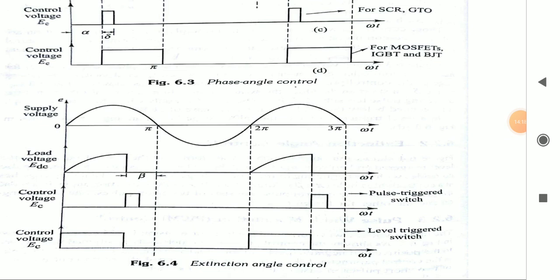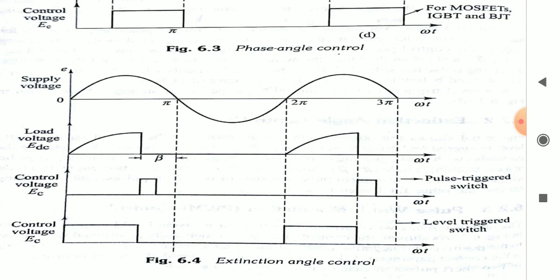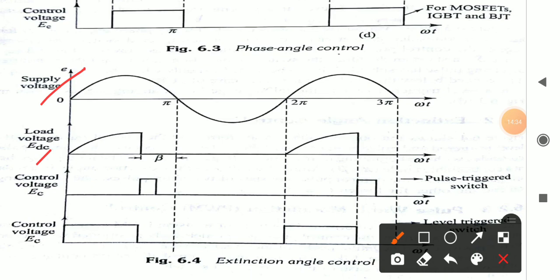The second control technique is extension angle control. There are two methods: pulse triggered switch and level triggered switch. In the pulse triggered switch method, the input supply voltage is available at the output until a pulse is applied. When the rising edge of the pulse is encountered, the output voltage becomes zero. This angle is called beta — the extension angle. An inductor (energy storing device) is used in this method.